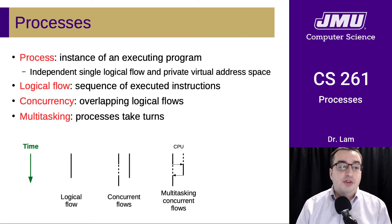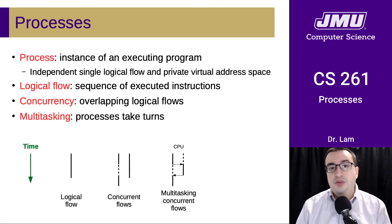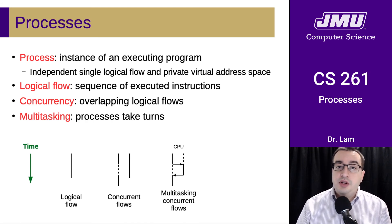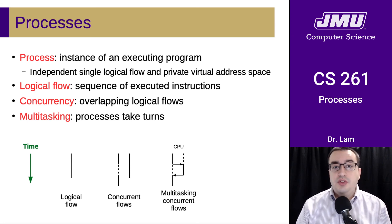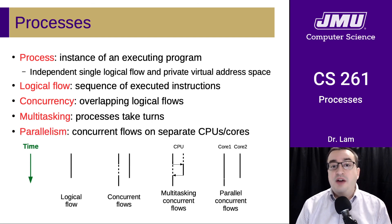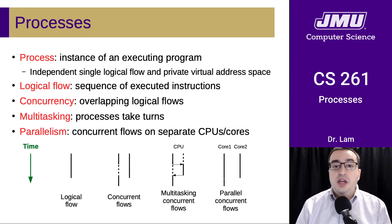Multitasking is when you have concurrent processes taking turns on a single CPU. One process runs its logical flow, the operating system interrupts it, switches to another which gets a time slice, then switches back to the first. If we have multiple CPUs or multiple cores, we can have concurrent flows that are actually running at the same time — this is called parallelism.